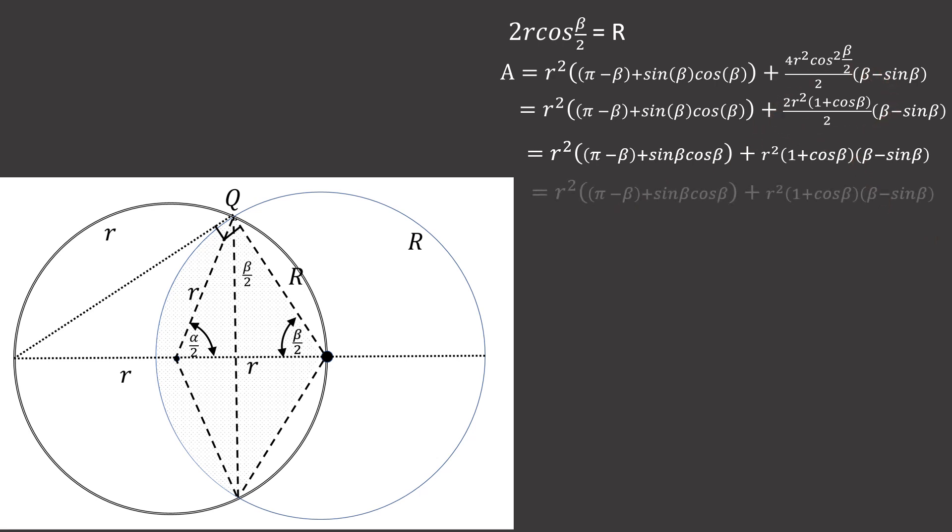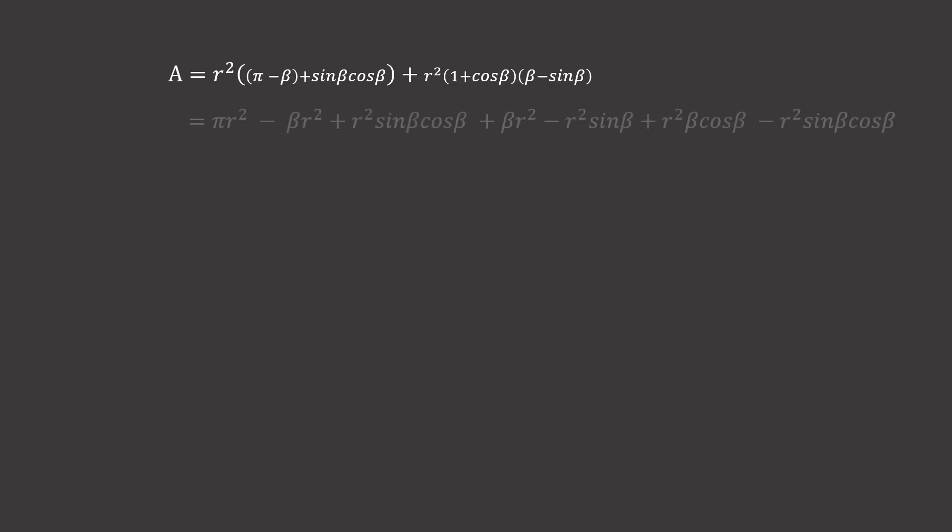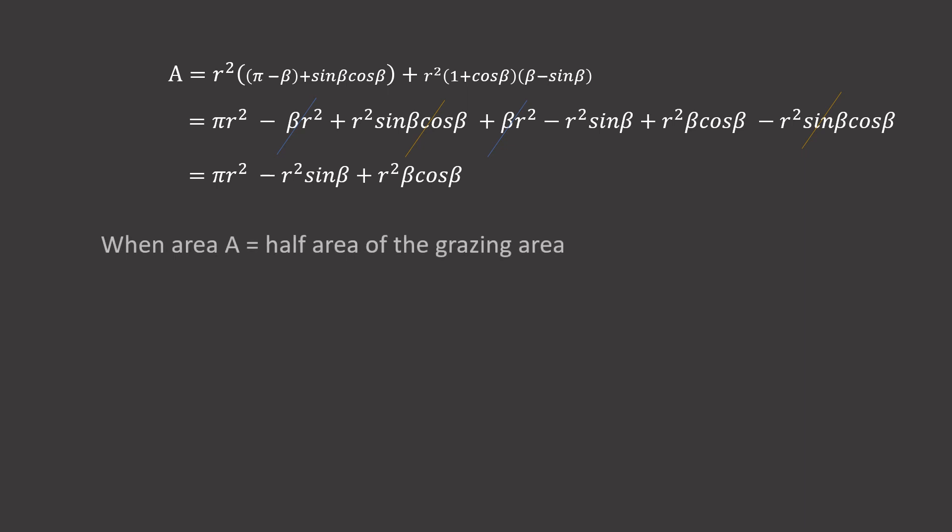Finally, we obtain the expression for the total area that consists of only beta and r. Expanding that expression out allows us to cancel some terms, and we are left with πr² - r²sin β + r²β cos β. We say that area A should equal half the area of the field. So πr² - r²sin β + r²β cos β equals πr²/2, where we cancel out the r² term, and eventually we are left with sin β - β cos β - π/2 = 0.